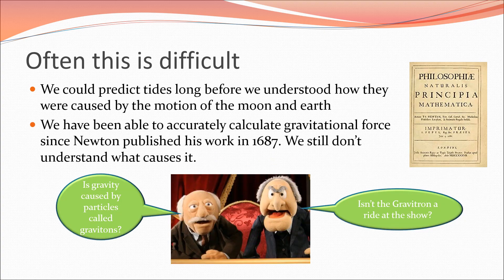This is often a fairly difficult thing to do. For example, we could predict the tides with great accuracy before we really understood what was causing it - before we understood how it was caused by the gravity and the earth and the moon and the motion of these objects. Since Isaac Newton published his work in 1687 describing how gravity works, we've been able to calculate gravitational force with a lot of accuracy. But as far as what actually causes it hasn't yet been proven. In some cases we think it might be particles called a graviton, which is a particle that would make this force happen. Some people think it might be a curvature of space-time that causes gravitational effects. Just an example of something we don't really know, but we can still kind of understand, and we're still working towards explaining exactly why that happens.